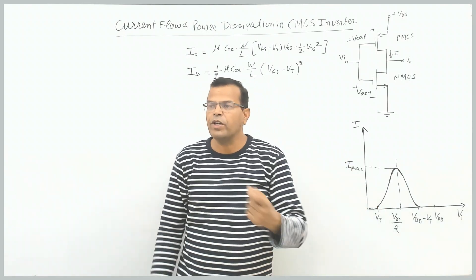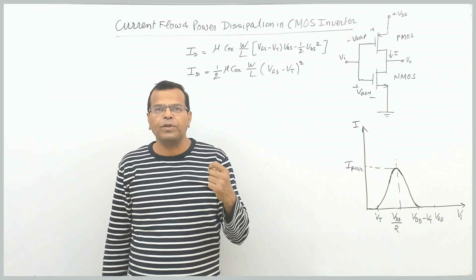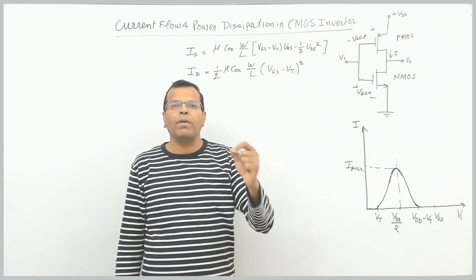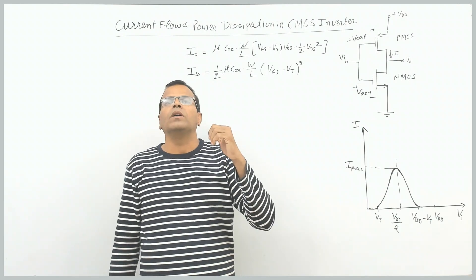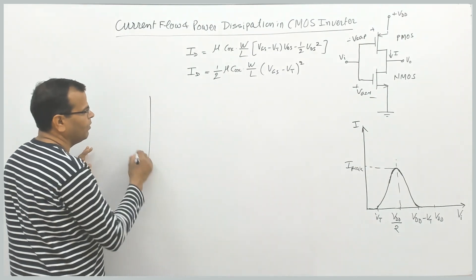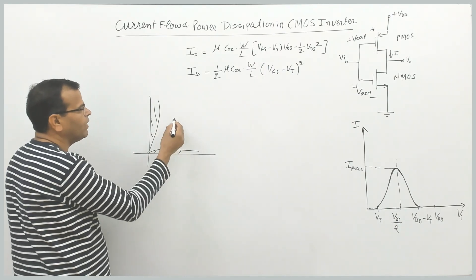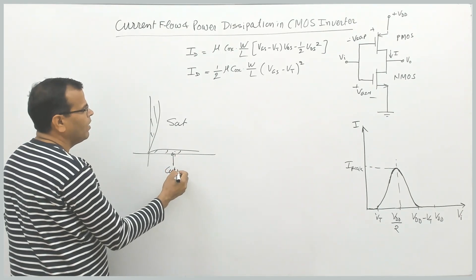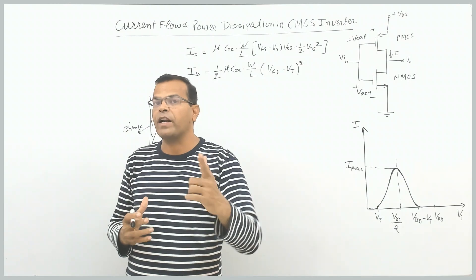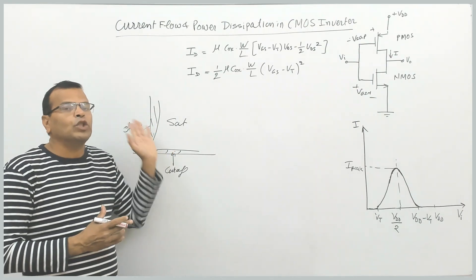Current for voltage range between 0 and threshold level is almost 0. When you increase the voltage beyond threshold, NMOS will turn ON. Remember, whenever a MOSFET changes its operation from cut-off, it enters into saturation then into ohmic. The device will never enter into ohmic region directly from cut-off — it will pass through saturation, and vice versa.